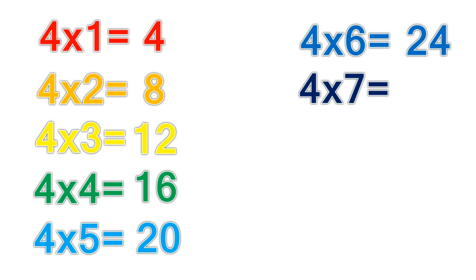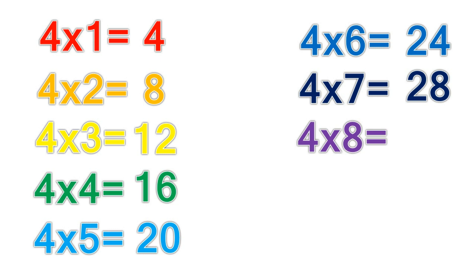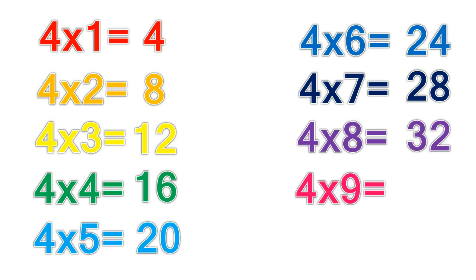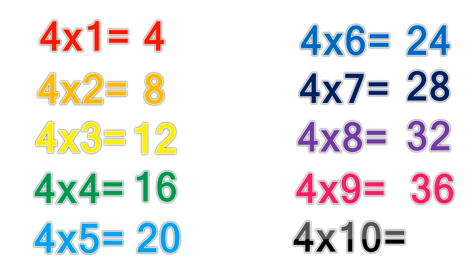4 times 6 equals 24. 4 times 7 equals 28. 4 times 8 equals 32. 4 times 9 equals 36. 4 times 10 equals 40.